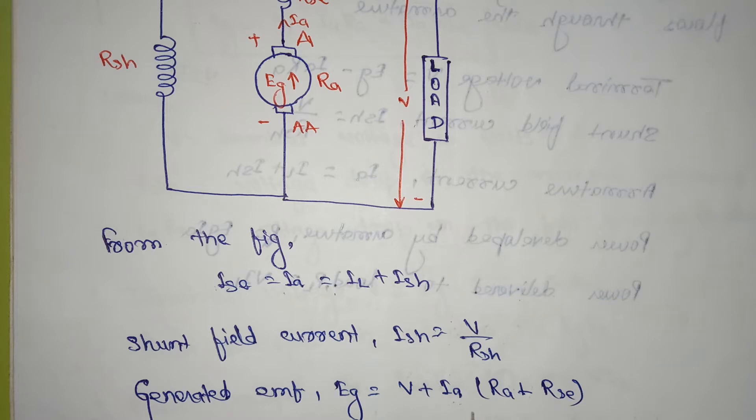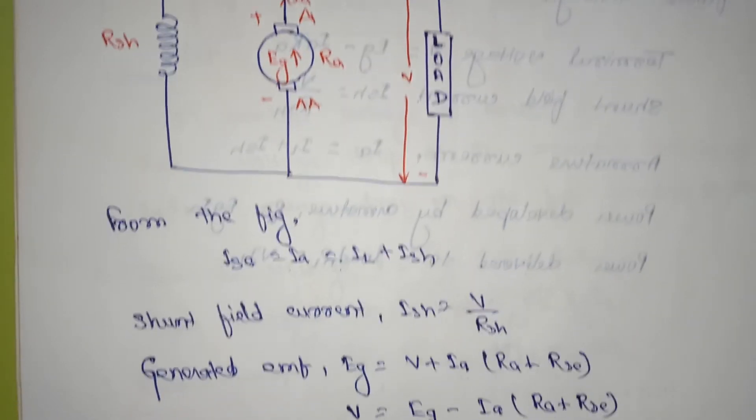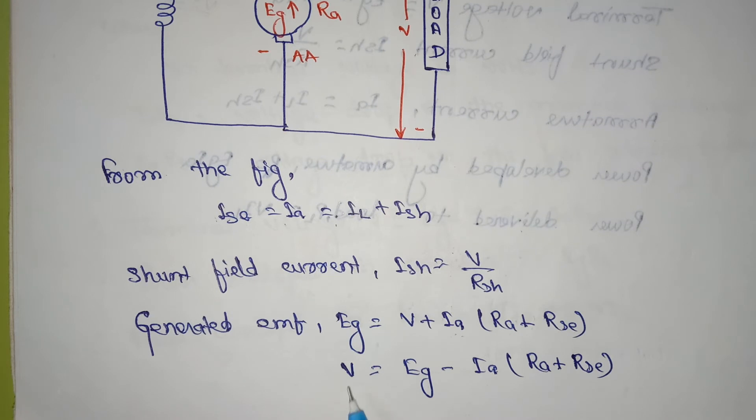Next, generated emf Eg is equal to V plus Ia bracket of Ra plus Rse. From the above equation value we can find out that V is equal to Eg minus Ia times Ra plus Rse.